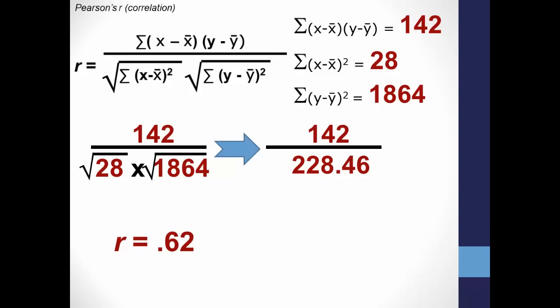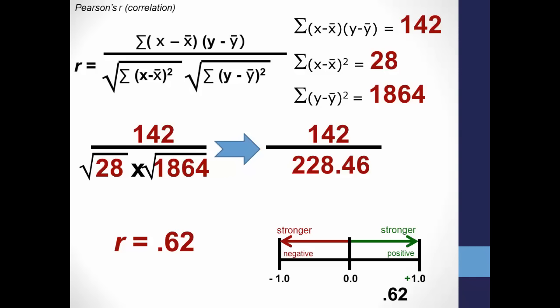Since .62 is close to positive 1.0, it appears to be a very strong positive correlation. It appears that the number of hours spent studying for an exam is positively correlated with the exam score.